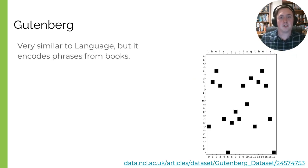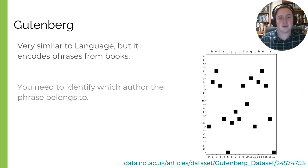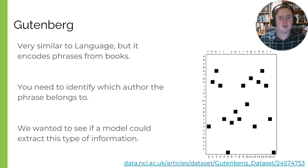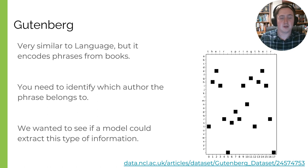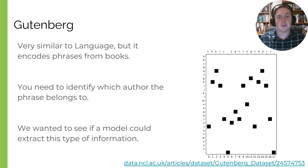Gutenberg is very similar to the Language dataset, but instead of encoding words from languages it encodes a phrase from a book, and the task is to identify which author that phrase belongs to. This is similar to Language in its research question: we want to see whether the information that the phrase contains can be identified by a machine learning model from an image representation of that string.